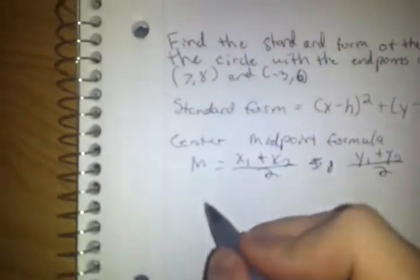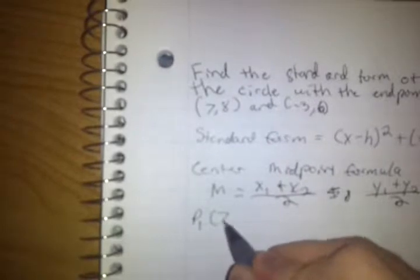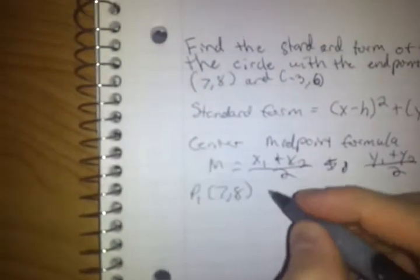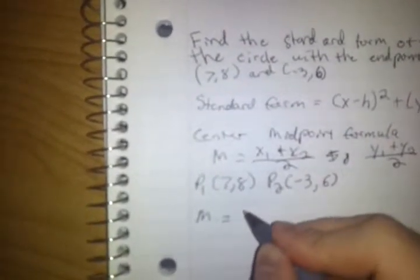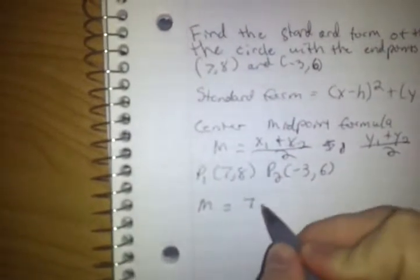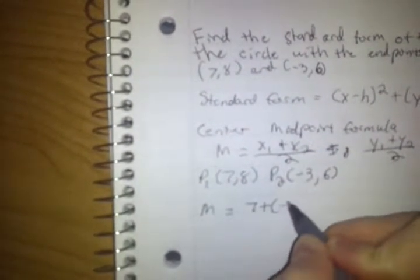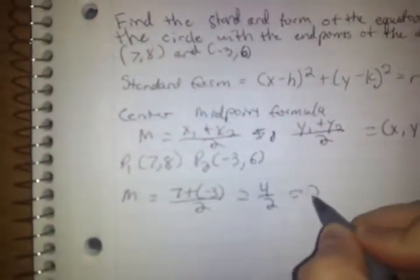Now we are going to put this to use with point 1, which is (7,8), and point 2, which is (-3,6). So you have (7 + (-3))/2, which equals 4/2, and that can be simplified down to 2. This is our center x-coordinate.